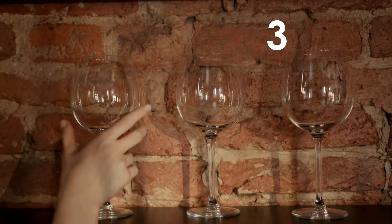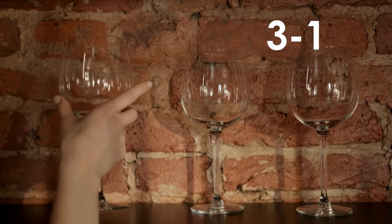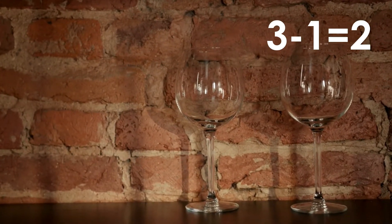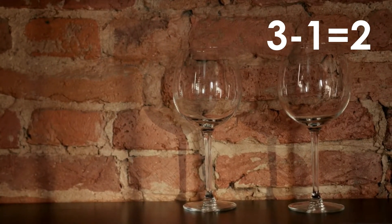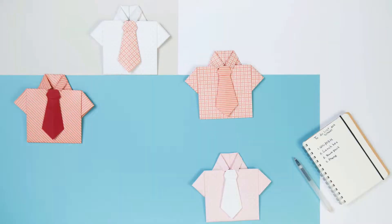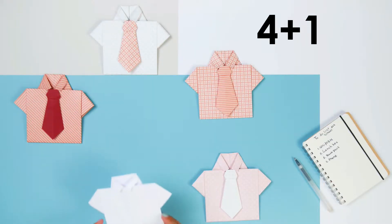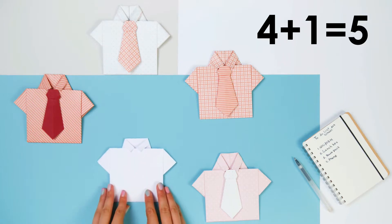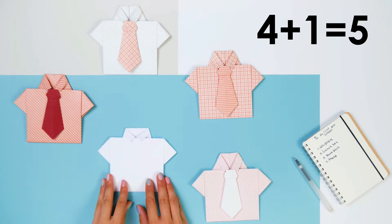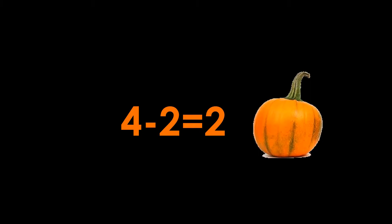Three minus one equals two. Four plus one equals five. Four minus two equals two.